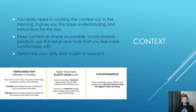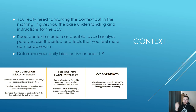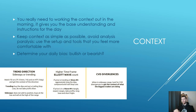In a sideways range, you can also look at CVD divergence to get context of what the biggest traders are doing. If you come up to the highs and form a lower high in the CVD with absorption, bigger traders are putting limit shorts there and want to push price lower. If you go to the lows and see a swing failure pattern with price holding and bullish divergence forming, bigger traders are putting limit longs there and want to push price higher.